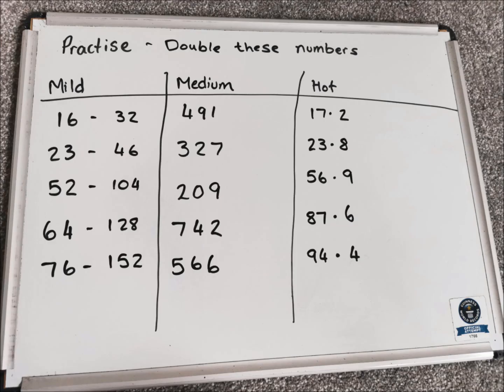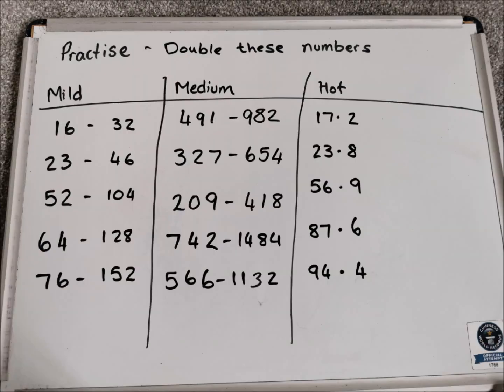Let's see the answers. Mild first: double 16 is 32, double 23 is 46, double 52 is 104, double 64 is 128, and double 76 is 152. For medium: double 491 is 982, double 327 is 654, double 209 is 418, double 742 is 1484, and double 566 is 1132.